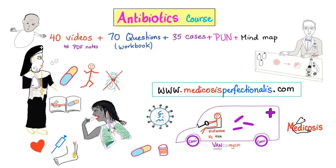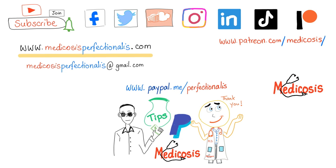You can get my antibiotics course by going to medicosisperfectionalis.com. It has 40 videos with their notes and cases. Next we'll talk about osmolality versus osmolarity. So please subscribe, hit the bell, and click on the join button. You can support me here or here. Go to my website to get my antibiotics course and my electrolytes course. Thank you for watching. As always, be safe, stay happy, and study hard. This is Medicosisperfectionalis.com, where medicine makes perfect sense.